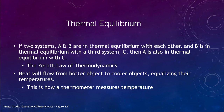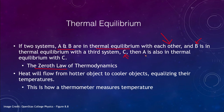Now let's look at thermal equilibrium and the zeroth law of thermodynamics. The zeroth law states that if system A is in thermal equilibrium with system B, and system B is in thermal equilibrium with system C, then system A is also in thermal equilibrium with system C. It describes how the temperatures of systems balance together: if one thing is in equilibrium with another, and two things are in equilibrium with the same thing, then they are also in equilibrium with each other.